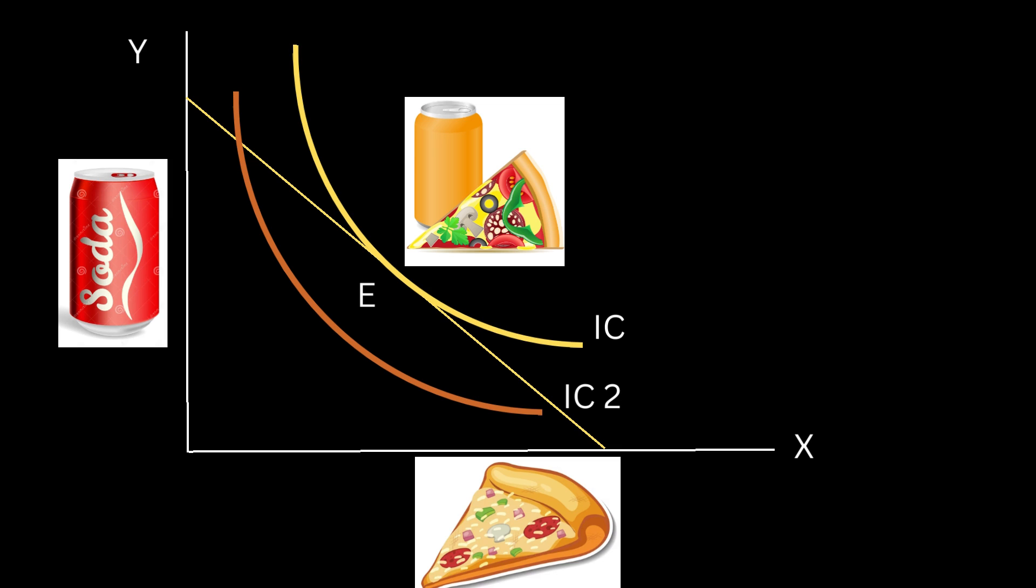Graphically, we can represent the utility function as an indifference curve map. These indifference curves show combinations of x and y that give the same level of utility for each indifference curve of the consumer. The budget constraint represents the combinations of x and y that the consumer can afford with their income. The optimal solution will be the point of tangency between the highest possible indifference curve and the budget constraint. This occurs where the slope of the indifference curve is equal to the slope of the budget constraint. The slope of the indifference curve represents the marginal rate of substitution. The slope of the budget constraint represents the relative price ratio between the goods.